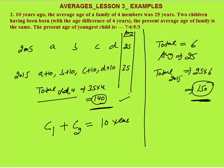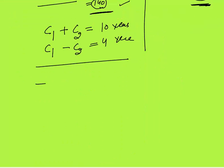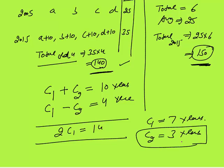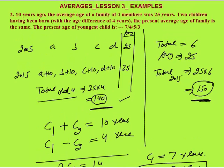The age difference between the two children is four years. Let child 1 be the older one: c1 plus c2 equals 10, and c1 minus c2 equals 4. Adding these gives 2·c1 equals 14, so c1 equals 7 years. Putting this back, c2 equals 10 minus 7 equals 3 years. The youngest child is 3 years old. This medium-difficulty age question can be solved in under a minute using the key property that if each observation increases by the same constant, the average also increases by that constant.